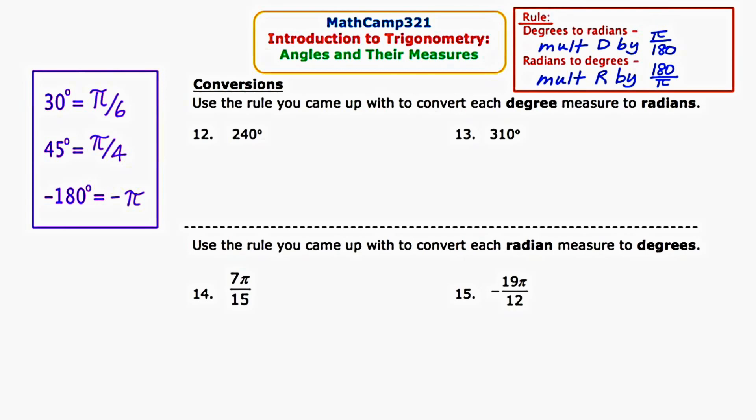Now let's use the rule to convert each degree measure to radians. In number 12, they give us an angle measure of 240 degrees and I need to convert it to radians. We're going to take our degree measure and multiply it by π/180. This simplifies to 240π/180. The trailing zeros are going to cancel and 24 and 18 are both divisible by 6, leaving us with a radian measure of 4π/3.